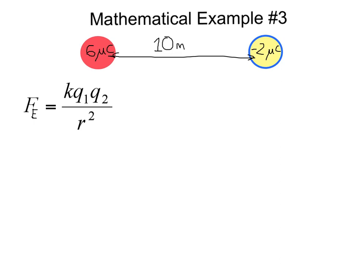Now that we've completed two conceptual examples about how the electric force changes based on changing the charge or distance, let's try a mathematical example to calculate the electric force outright. Here we have a charge of positive 6 microcoulombs separated by a distance of 10 meters with another charge of negative 2 microcoulombs.